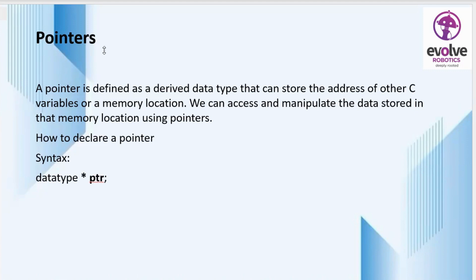How do we declare a pointer? The declaration of pointers is similar to variable declaration in C, but we use a star operator. We specify the data type followed by the pointer variable name, and use a star operator in the declaration of the pointer.